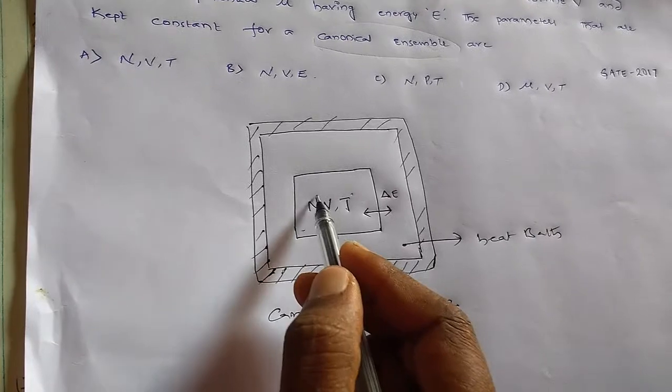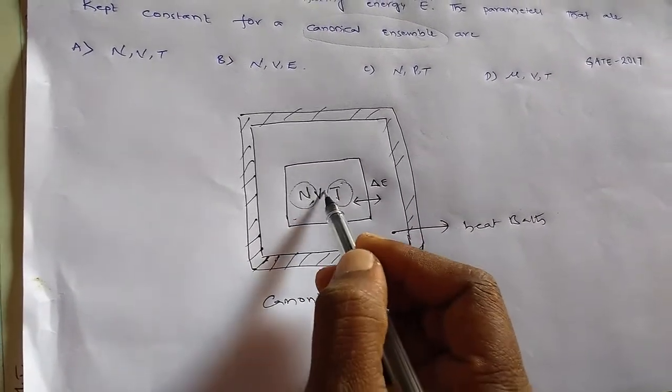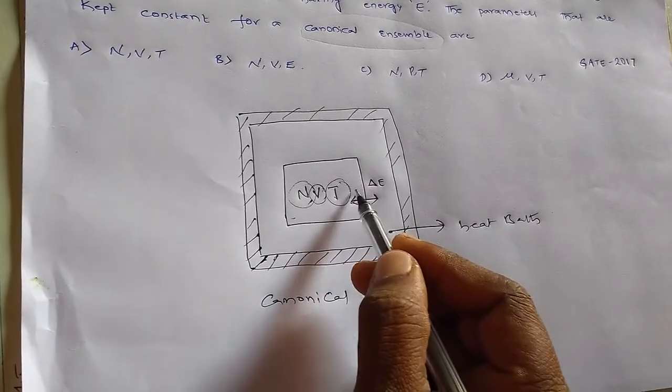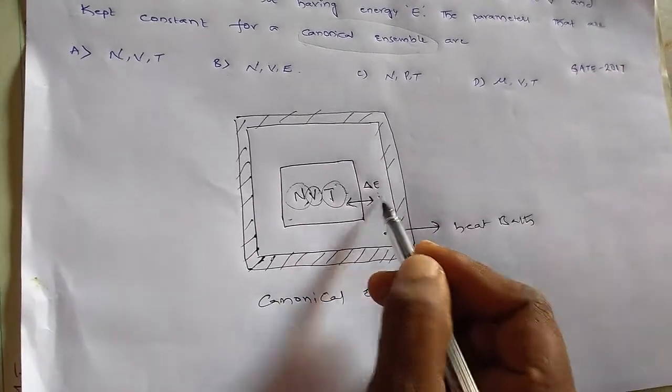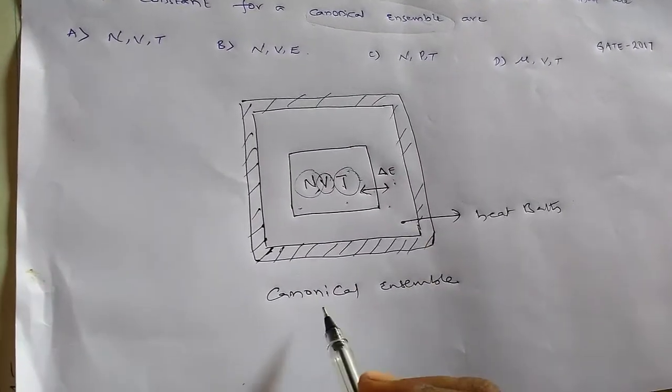Canonical ensemble has number of particles constant, constant temperature, constant volume. So here only the transfer of energy takes place to get equilibrium between system and heat bath. So this is canonical ensemble.